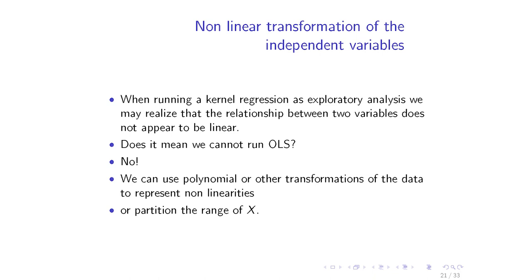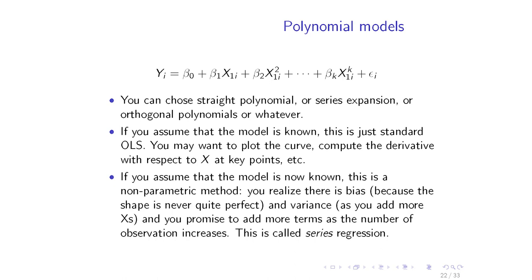There are two ways you could go, and I'm going to briefly talk about both. The first thing you could do is to say that any function can be approximated by polynomials. So you regress y not just on x, but on polynomials of x — or in fact, polynomials of transformations of x. Once you do that, you're back to OLS.